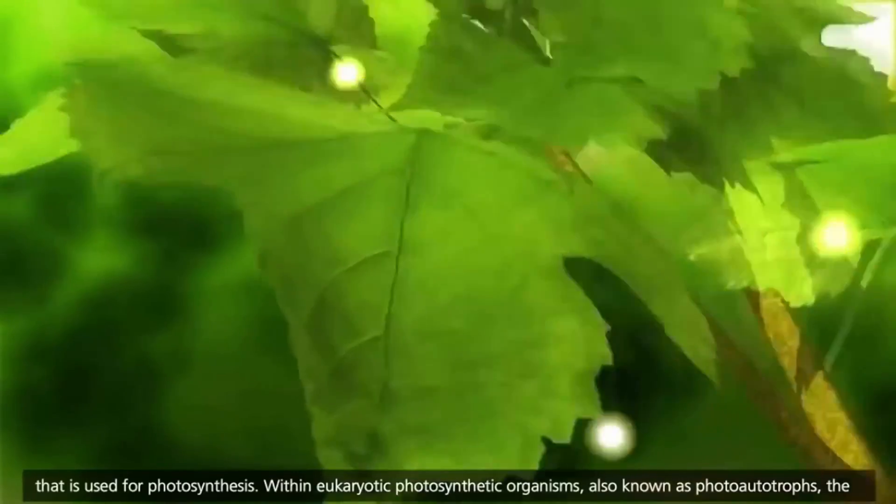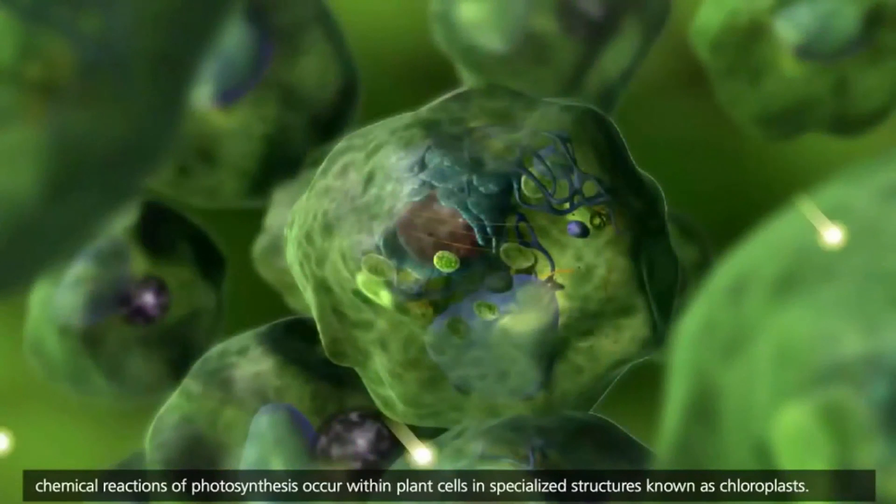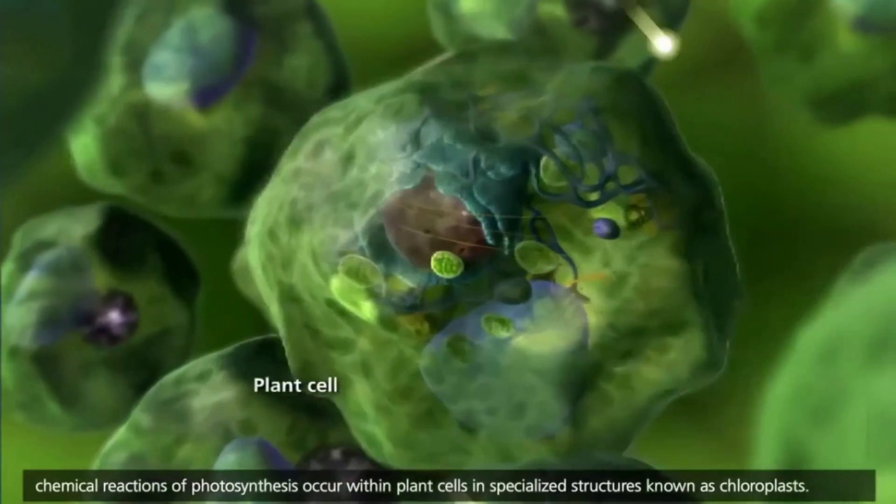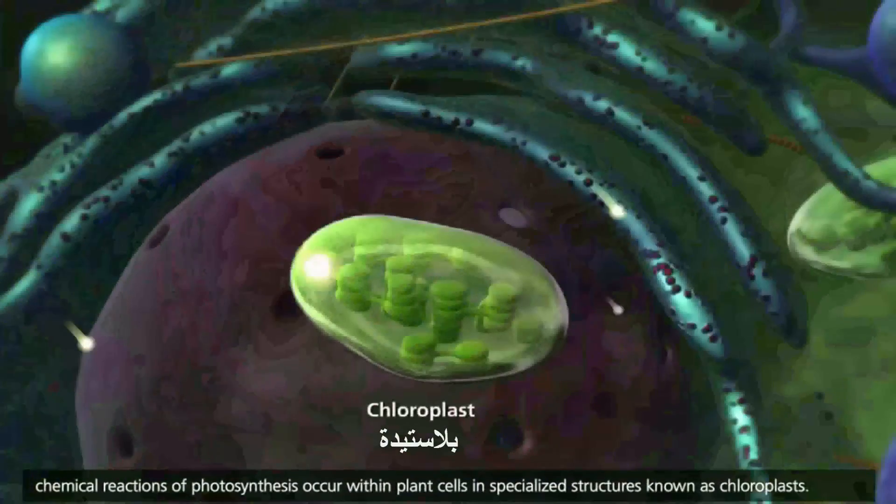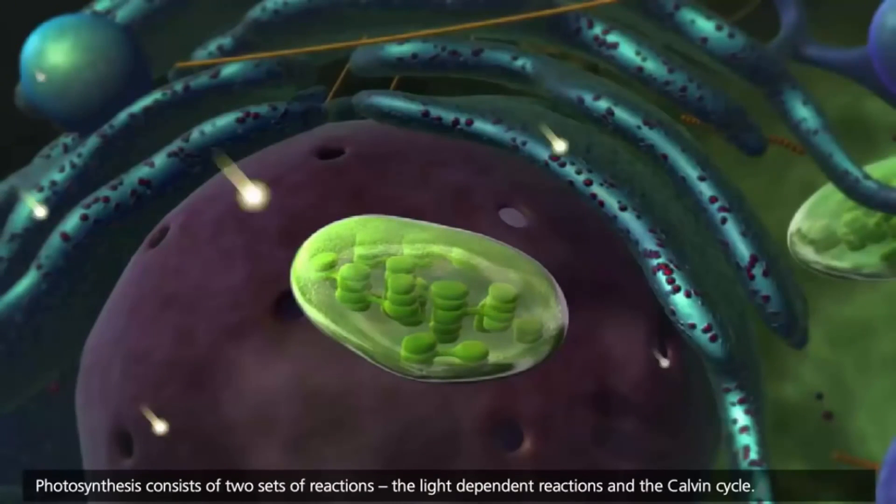Within eukaryotic photosynthetic organisms, also known as photoautotrophs, the chemical reactions of photosynthesis occur within plant cells in specialized structures known as chloroplasts. Photosynthesis consists of two sets of reactions, the light-dependent reactions and the Calvin cycle.